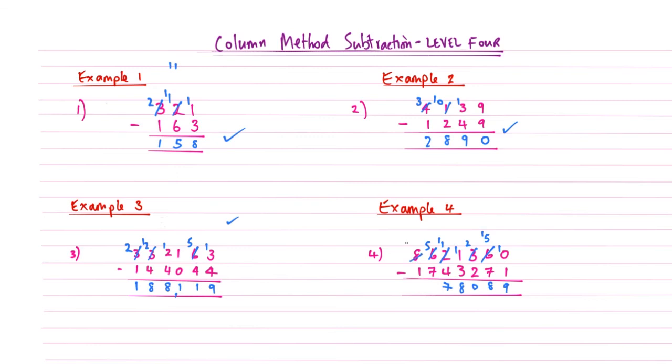5 subtract 7. Again we can't do it. This now becomes a 7. I've just done a 7 with a line through. Sometimes I do it, sometimes I don't. Maybe I should get better at that. But it really doesn't matter. Put a 1 next to it. 15 take away 7. Again that gives me an 8. And then 7 take away 1. It gives me a 6. So this one look. We've got 3 occurrences of this double compensating. So you really have got to be properly on it when you're doing column method subtraction. This isn't easy.